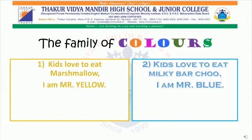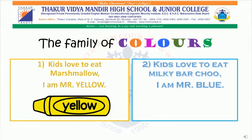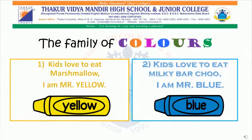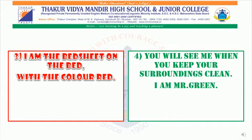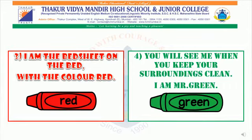Kids love to eat Marshmallow — I am Mr. Yellow. Kids love to eat Milky Bar Chew — I am Mr. Blue. I am the best on the bed with the colour red. You will see me when you keep your surroundings clean — I am Mr. Green.